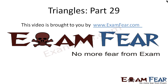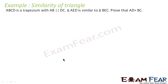Hello friends, this video on triangles part 29 is brought to you by examfear.com — No more fear from exam. Before watching this video, please make sure that you have watched part 1 to part 28. Let's take one more example: ABCD is a trapezium with AB parallel to DC, and triangle AED is similar to triangle BEC. We have to prove that AD is equal to BC.